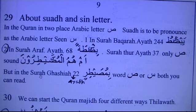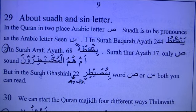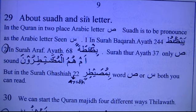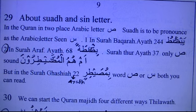Now I'm talking about the Sad and Sin rule. In a few places we can see how to apply it. First of all, in my book on page 9 and rule number 29, there are rules about Sad and Sin letters. In the Quran Majid, there are two places where the Arabic letter Sad is to be pronounced as Sin.